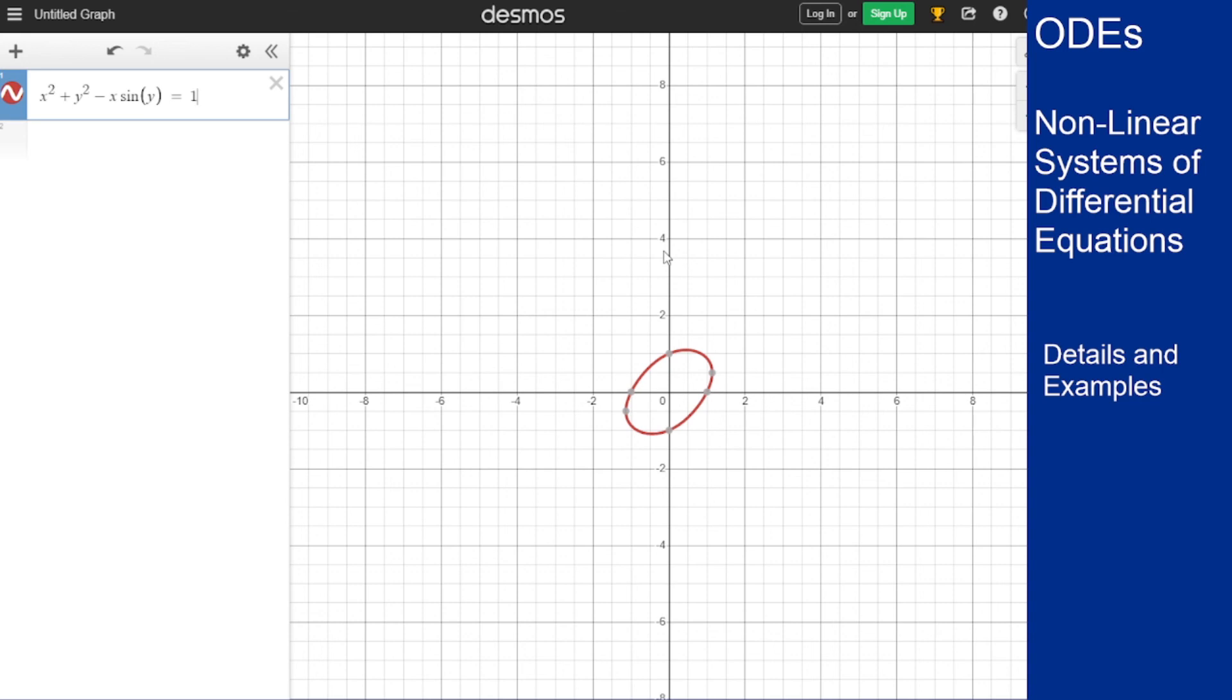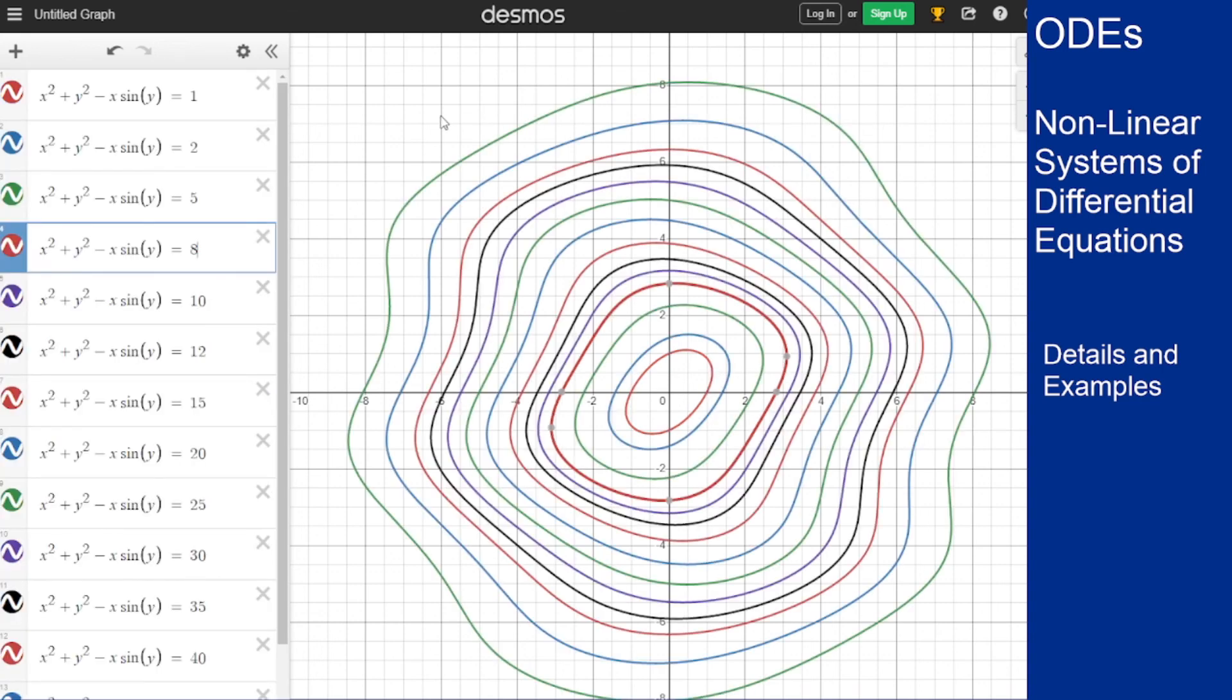And so it looks like I can plot a bunch of these all at once and you get a collection that looks something like this. So for different initial conditions we know the solution will stay on one of these curves and trace it out around the origin forever and ever.